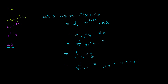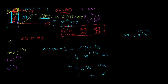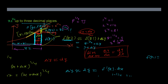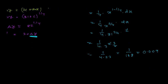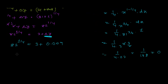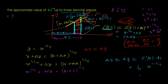Using a calculator, 1/108 ≈ 0.009259... The question asks for three decimal places, so Δy ≈ 0.009. Therefore 82^(1/4) ≈ 3 + 0.009 = 3.009. It's not exactly equal — it's approximately equal to 3.009. That is our answer. This is how we find the approximate value using the derivative concept.